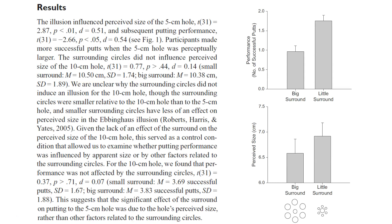Here are the results of the putting study: 'The illusion influenced the perceived size of the 5 centimeter hole': t(31) = 2.87, p < 0.01, d = 0.51, 'and subsequent putting performance': t(31) = -2.66, p < 0.05, d = 0.54. Participants made more successful putts when the 5 centimeter hole was perceptually larger. The graph shows performance — number of successful putts — alongside perceived size. People who had the big surround thought the hole was smaller; those with the little surround thought the hole was bigger, and performed better.